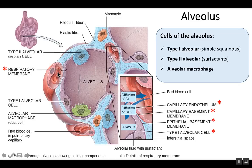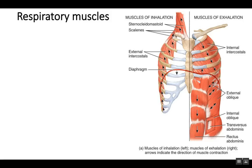That concludes the anatomy portion of the respiratory system. Continuing with the next video, we're going to begin looking at the function of the respiratory system, starting with ventilation — how do we inhale and exhale — which involves skeletal muscles collectively known as the respiratory muscles.